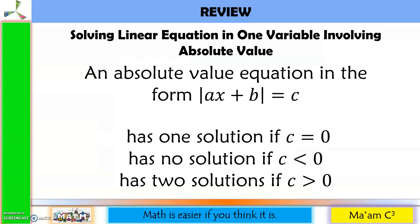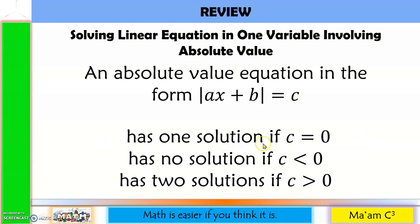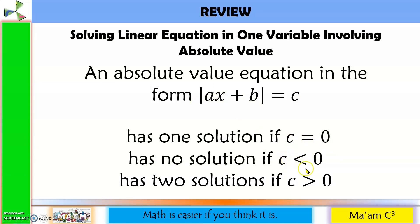Let's have a quick review. In my previous video lesson, you learned about solving linear equations in one variable involving absolute value. If c equals 0, there is only one solution: x equals 0. If c is less than 0, there is no solution, because no absolute value is less than a negative number. And if c is greater than 0, we have two solutions.